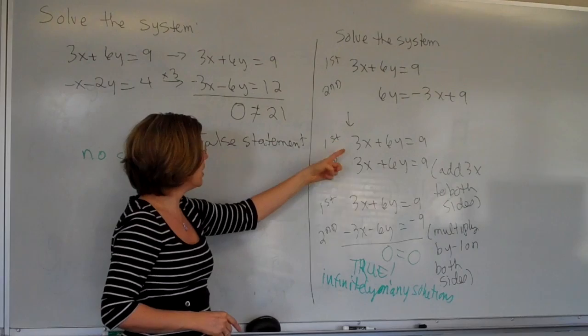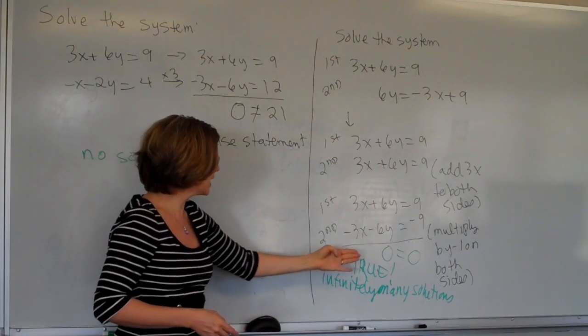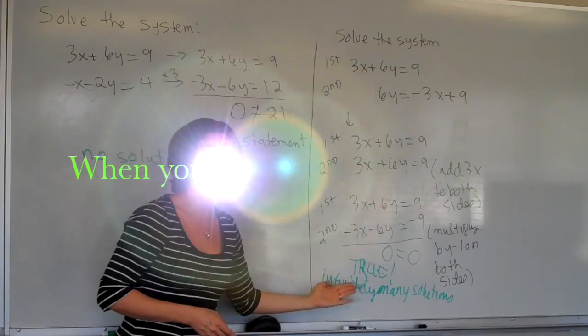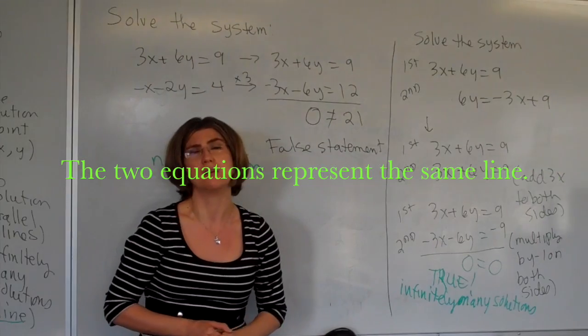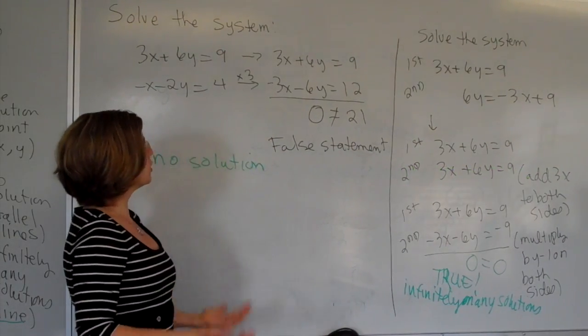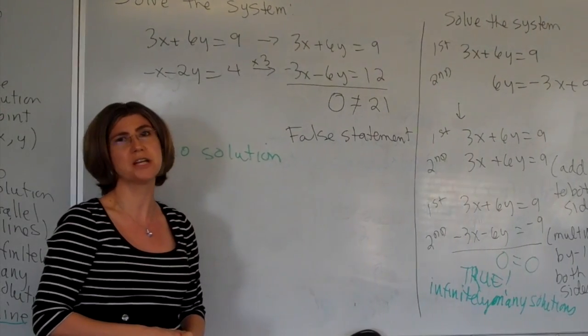Here, when we solve this system, we notice that these are the same line, or when we subtract them, we get 0 equals 0, which is a true statement. Thus, there are infinitely many solutions. This is the same line. So, these are the three possible situations that you can be in when you're solving a system of linear equations.